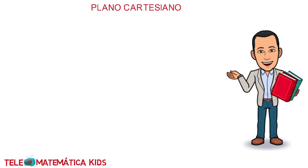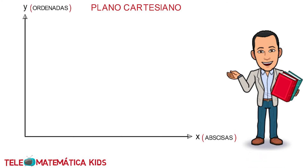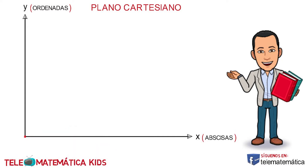En primer lugar, tiene una semirrecta horizontal que se denomina eje X, o como también se le llama eje de las abscisas, y perpendicular a esta, otra semirrecta que se denomina eje Y, o como también se le llama eje de las ordenadas. En segundo lugar, el punto de intersección entre ambos ejes se denomina origen de coordenadas.